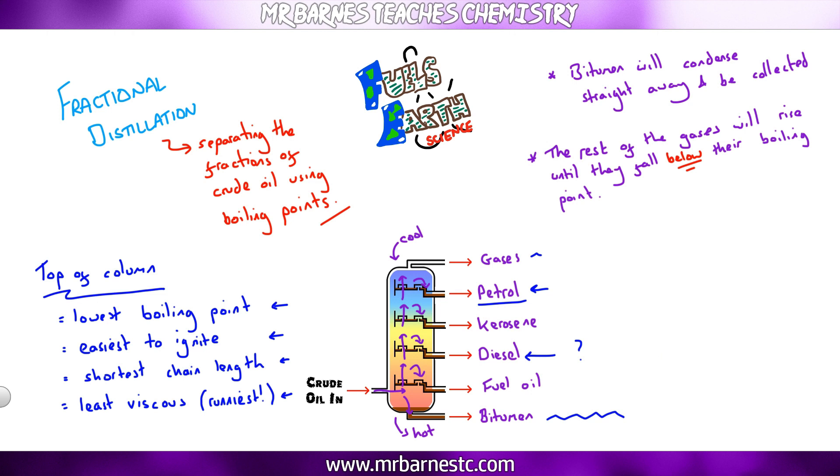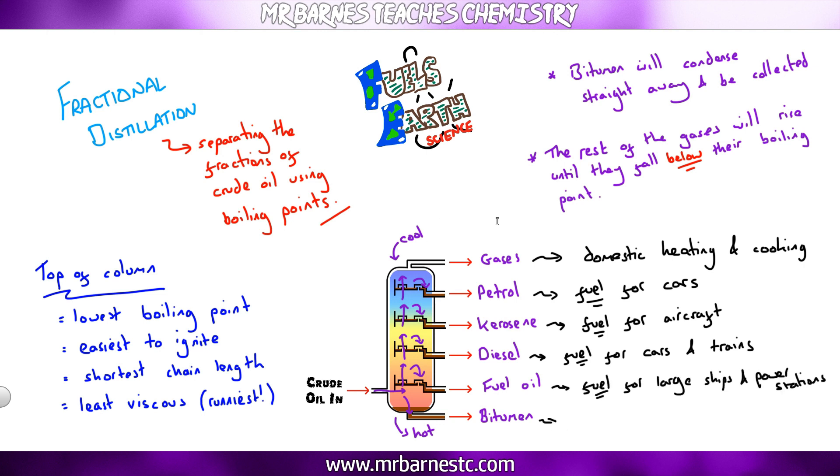The last thing you need to know on fractional distillation is the uses. So nice and simply, gases are used in domestic heating and cooking. Petrol is used as a fuel for cars. Make sure you say the word fuel, it's not just used for cars, it's a fuel for cars. Kerosene is a fuel for aircraft. Diesel is a fuel for cars and trains. Fuel oil is a fuel for large ships and power stations. And bitumen is used for surfacing roads and roofs.